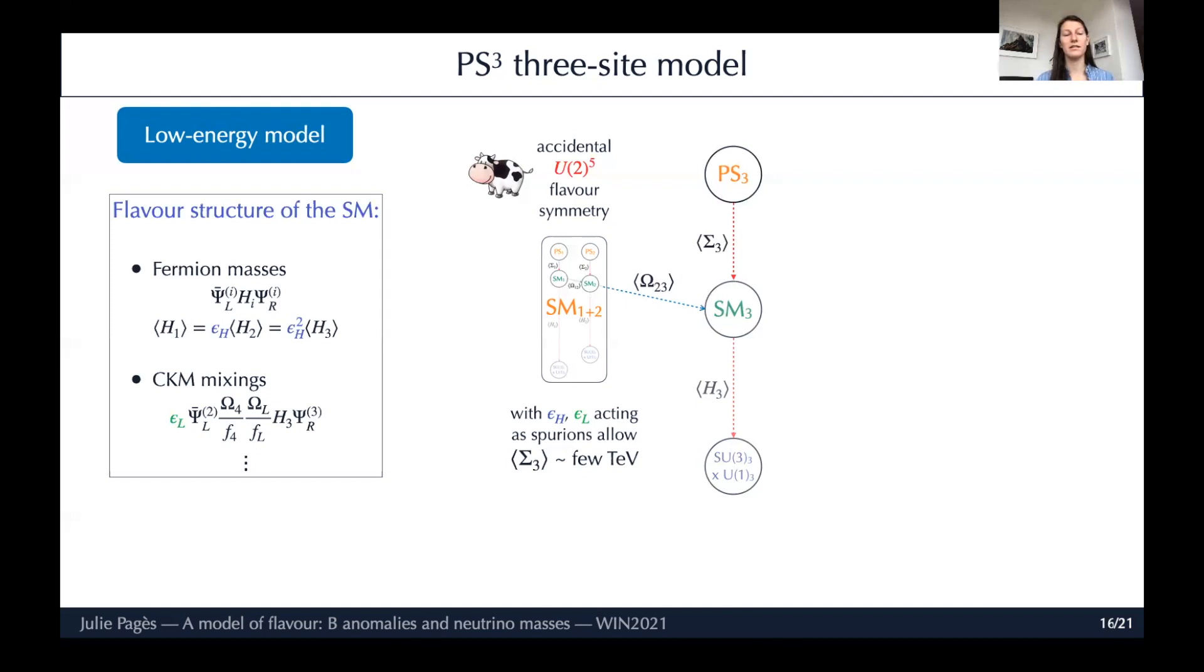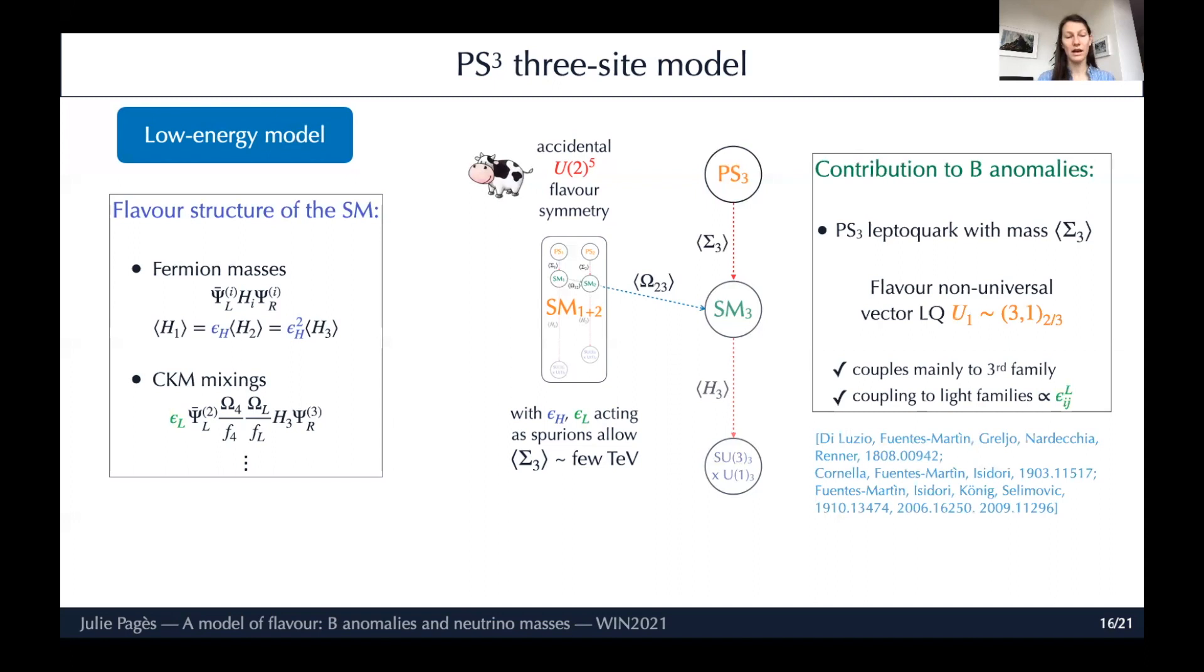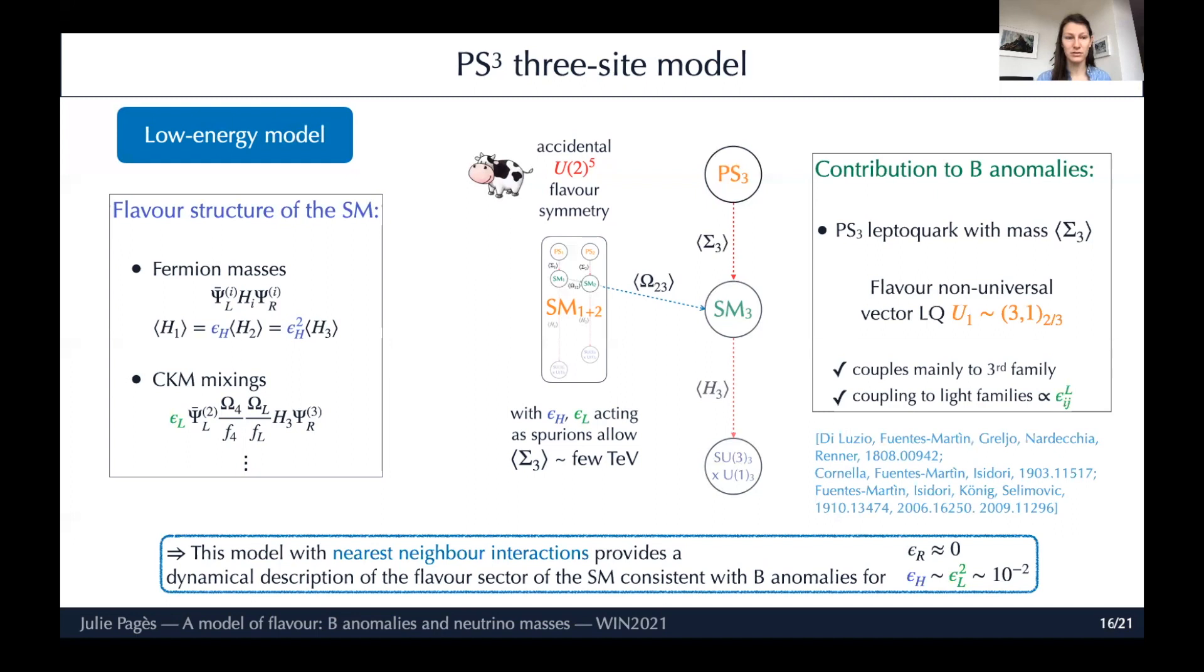Since we have this suppression between the third site and the light sites that prevents too strong interaction between them, the breaking of the last Pati-Salam gauge group can be as low as a few TeV. With this model, we can describe the flavour structure of the standard model, masses and mixing, and we can also explain the B anomalies with the U(1) leptoquark coming from the breaking of PS_3. It will couple mainly to the third family of quarks and leptons and couple to the light families with a suppressed interaction proportional to εL. This model with nearest-neighbor interactions provides a dynamical description of the flavour sector of the standard model that is consistent with the B anomalies, provided we choose these nearest-neighbor interactions or U(2)^5 spurions as εH ≈ εL^2 ≈ 10^-2 and a really small εR.